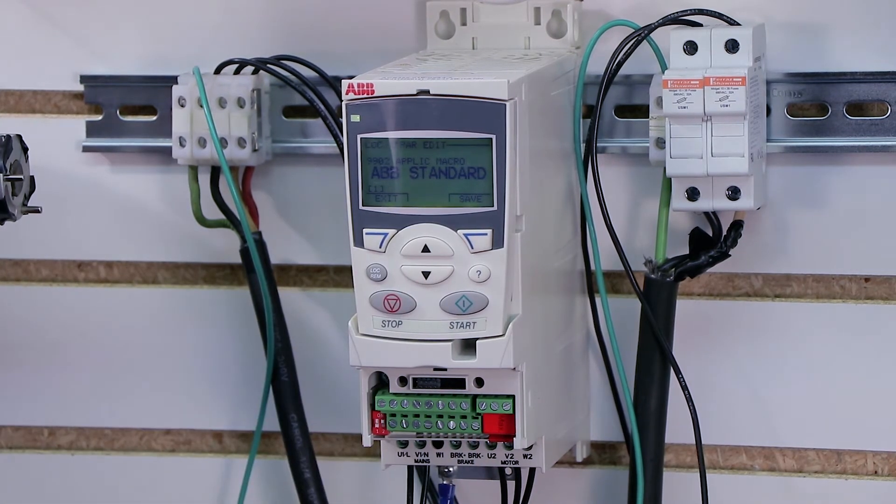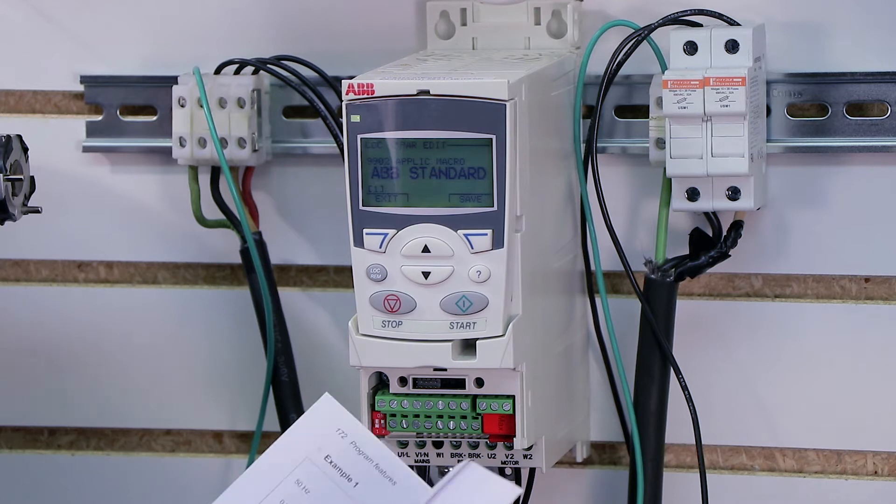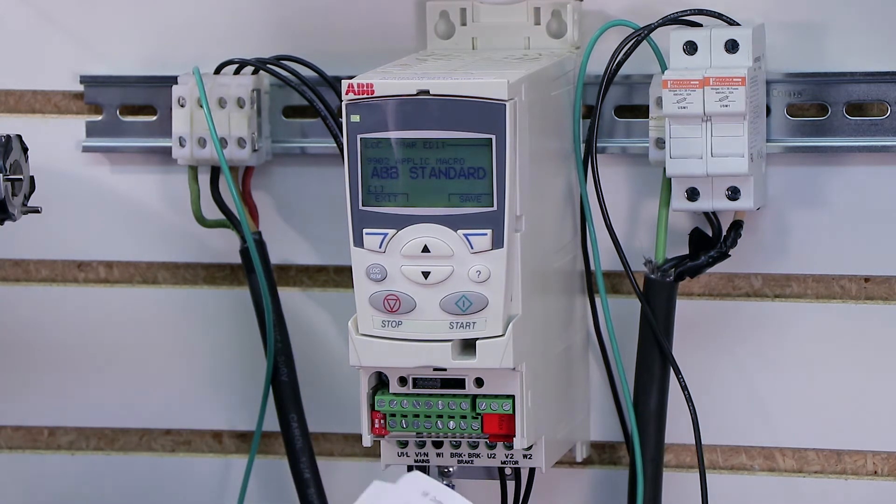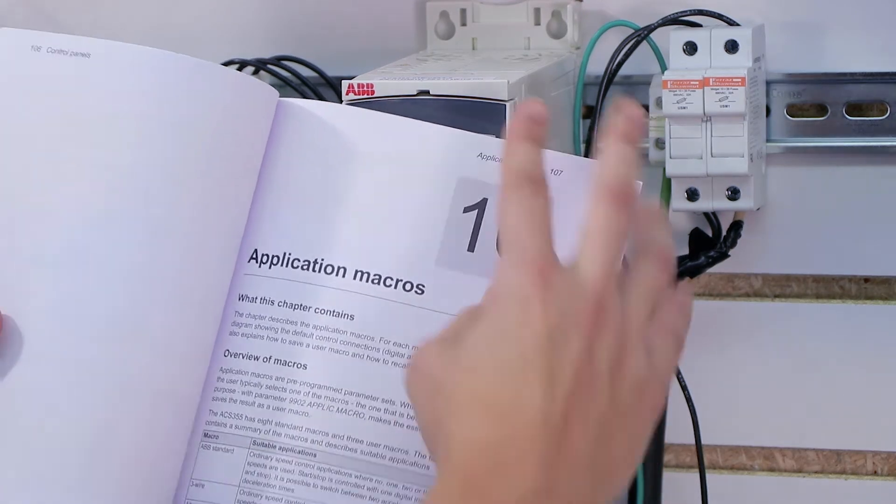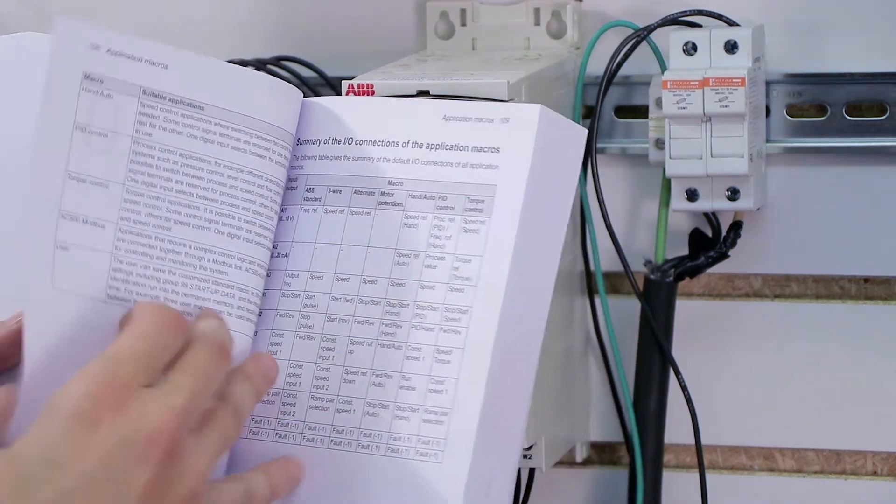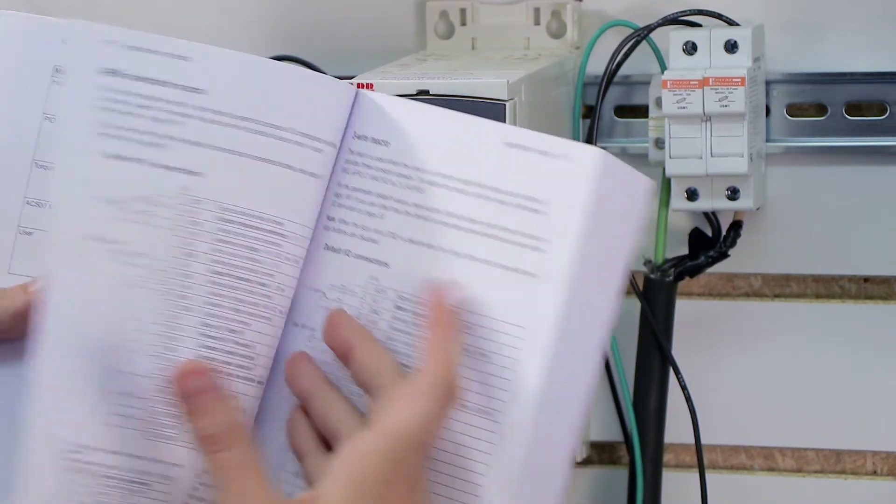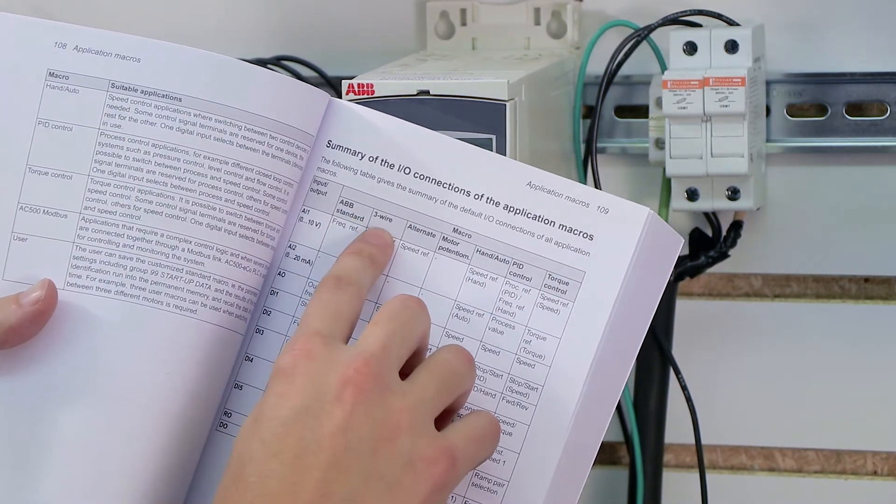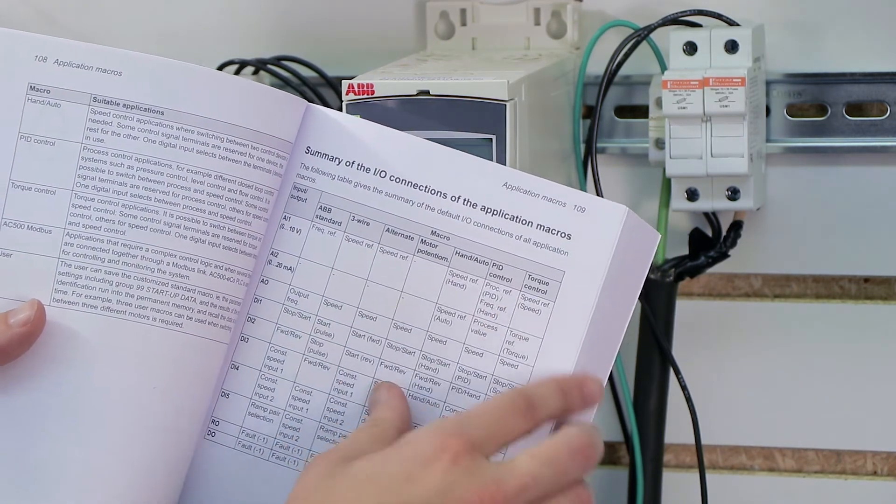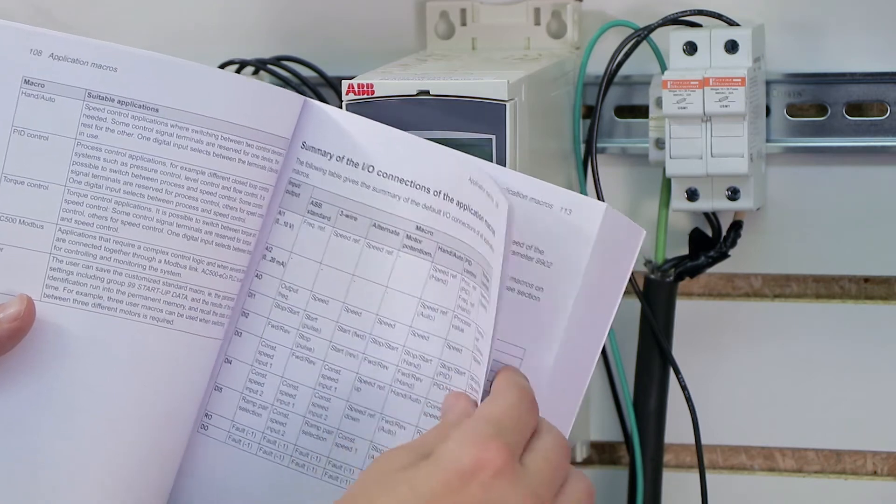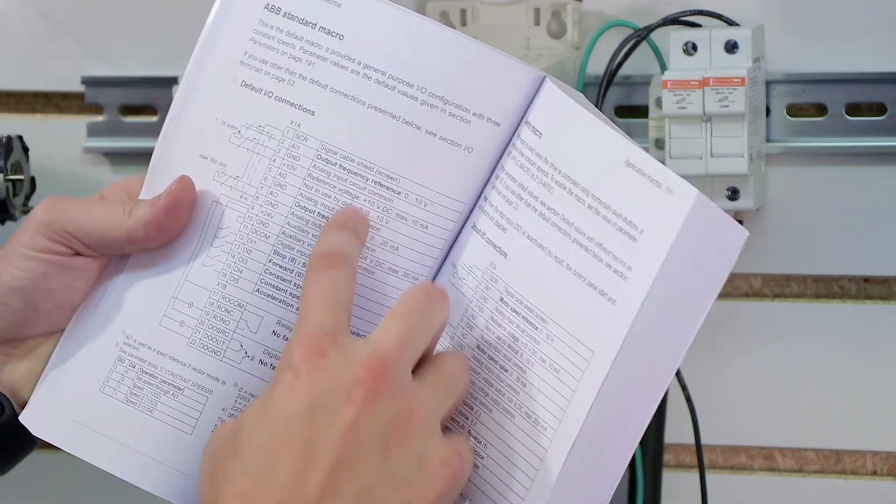Now macros are really cool. If you haven't had a chance to look in your manual yet, you can actually pull up the macro section, and the macro gives you a number of different, this is application macros in chapter 10. The macros give you basically a default configuration. So there's a standard, a three wire setup, an alternate setup, a motor potentiometer setup, a hand and auto setup. So these are like presets, they're pre-built-in presets for certain wiring setups and things like that.